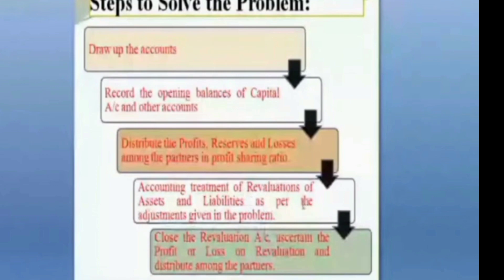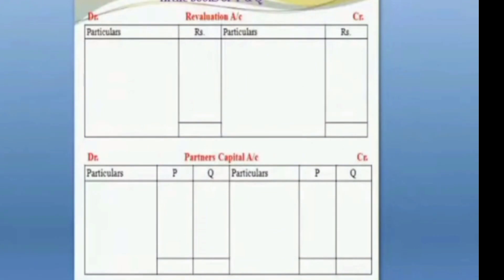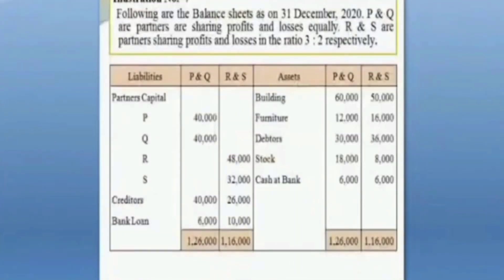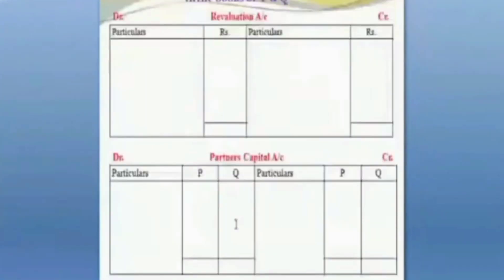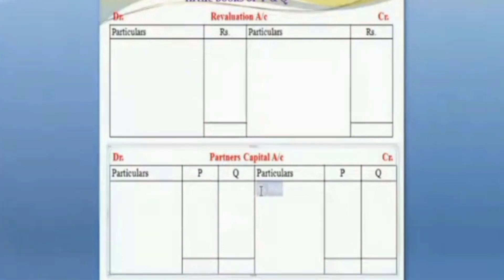The accounting treatment involves: first, revaluation of assets and liabilities as per the adjustments given in the problem; second, accounting treatment; and third, closing the accounts. In the books of P&Q, we start with the capital balance. The capital balance brought down: P is 40,000, Q is 40,000.